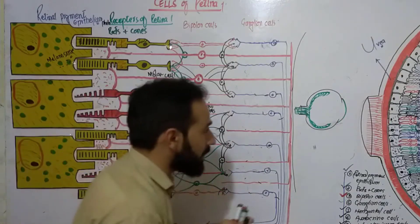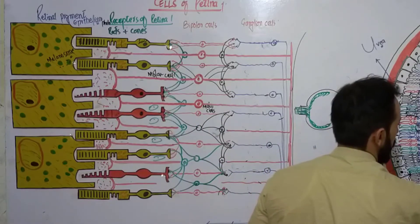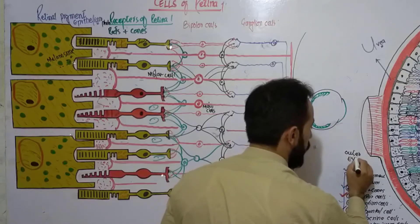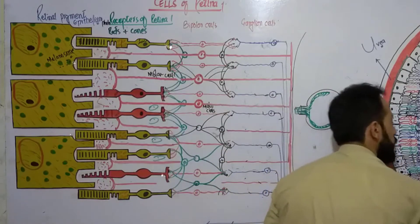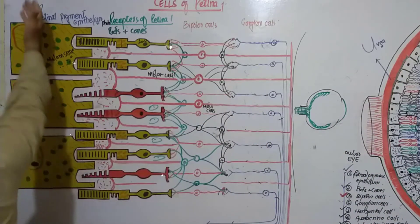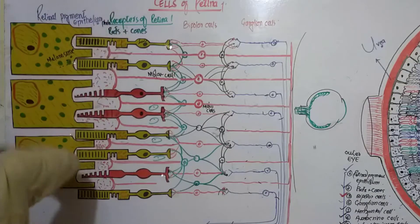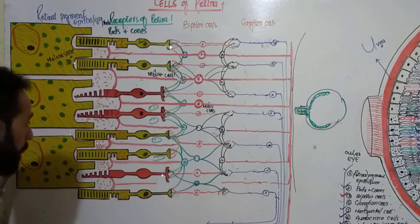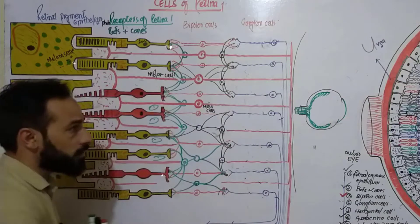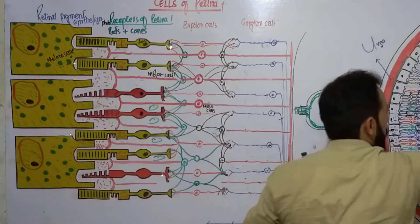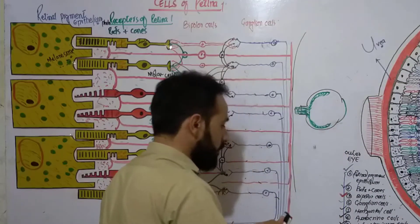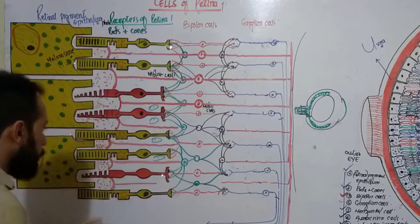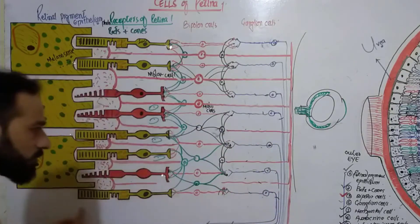This is the inner part of the eye and this is the outer part of the eye. The layers of the retina are counted from the outer side to the inner side. Here is the choroidal layer, then the membrane of Bruch, and then begins the retina. We are moving from outside to inside. The last layer of the retina borders the vitreous body.